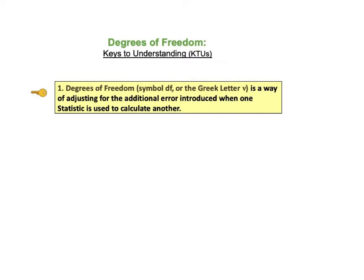The first KTU says: Degrees of Freedom, which is symbolized by DF, or the Greek letter nu, is a way of adjusting for the additional error that is introduced when one statistic is used to calculate another.